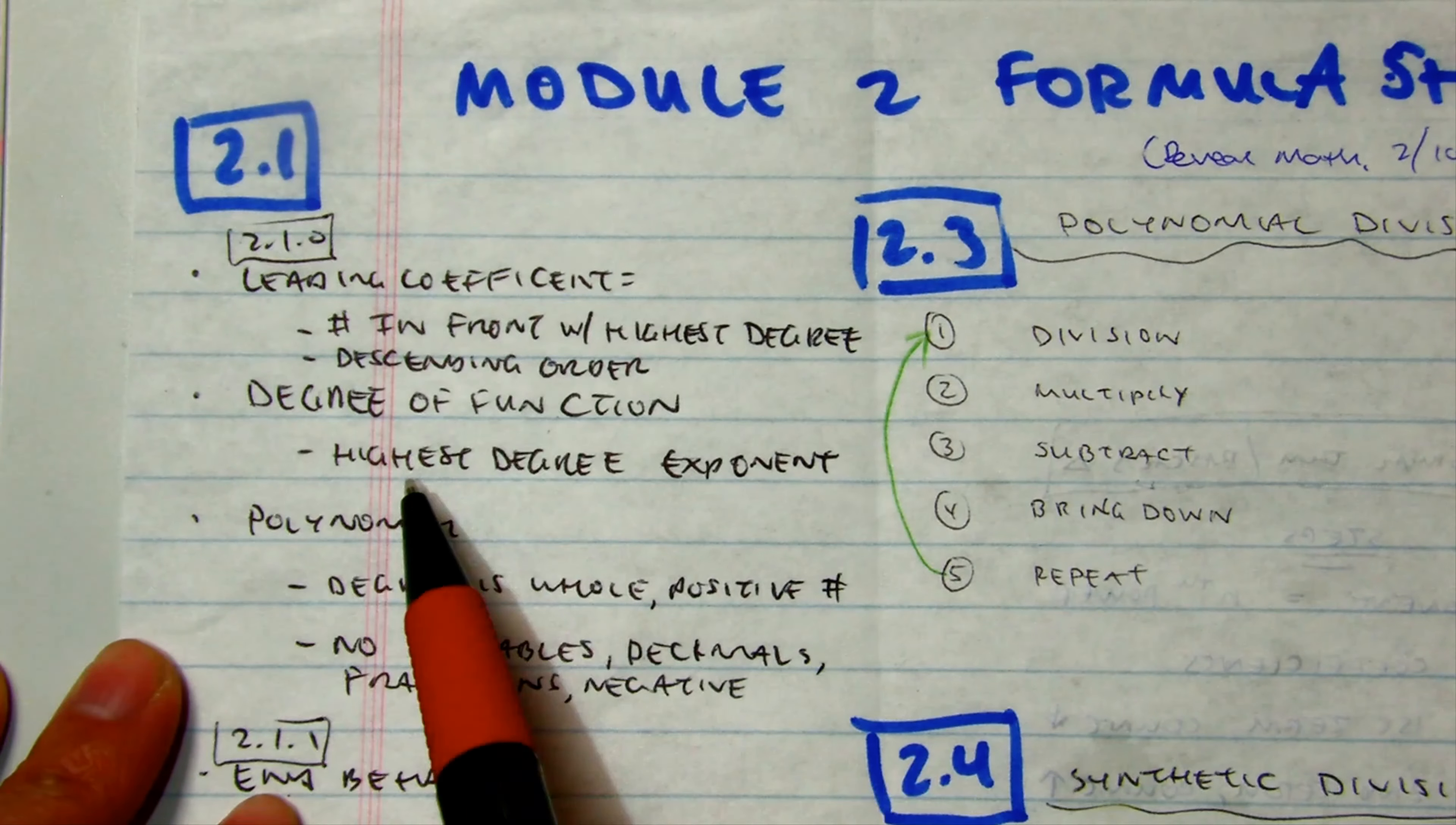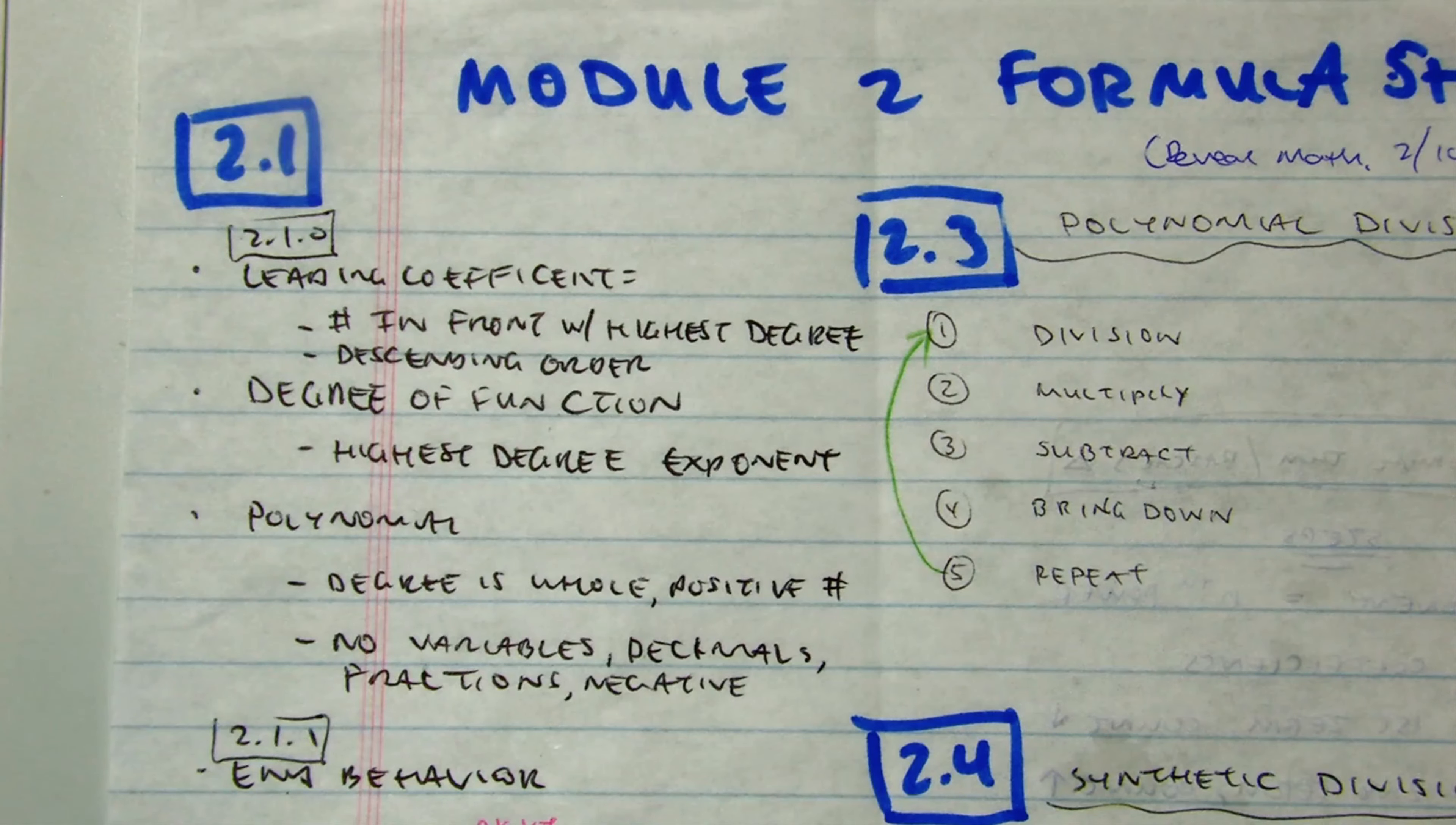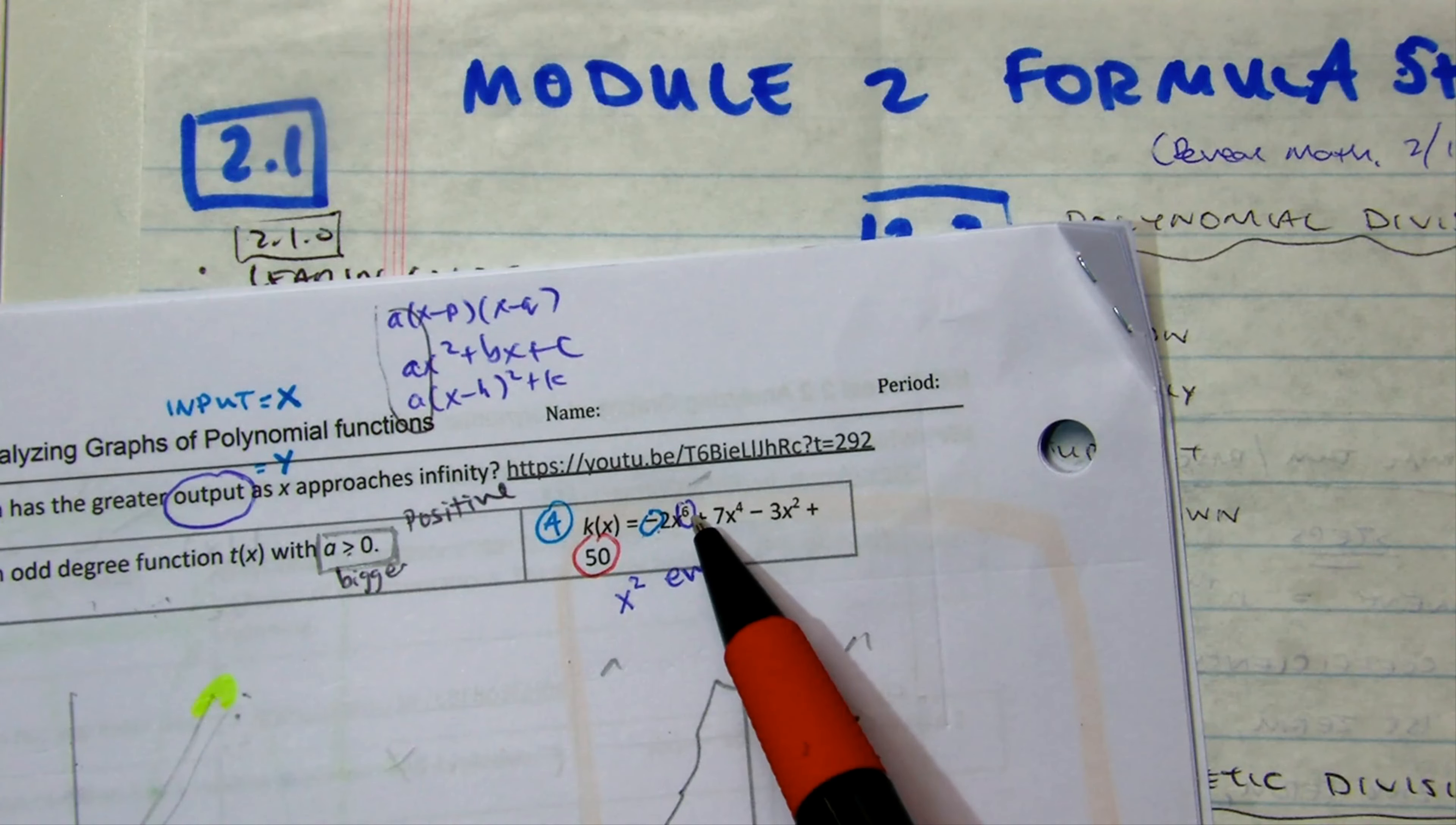Okay, the degree of the function is the highest degree or the exponent. You know, if you put something into the oven, like 350 degrees, it's up there in the top right. That is the degree of function.